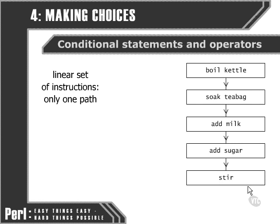First we have to boil the kettle, then we move on to soaking the tea, then add the milk, then add the sugar, and then stir. There's no possibility of any choices taking place there.